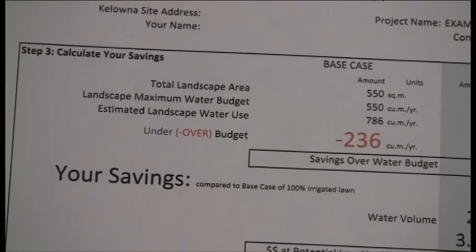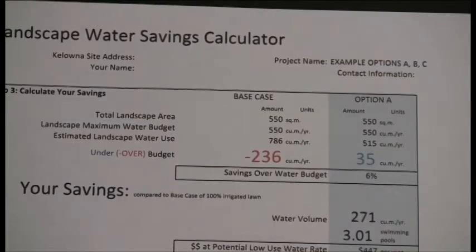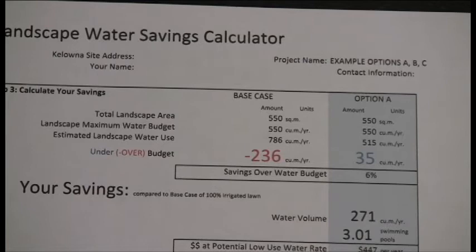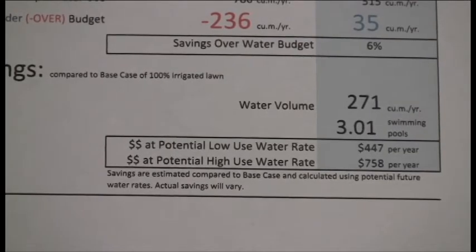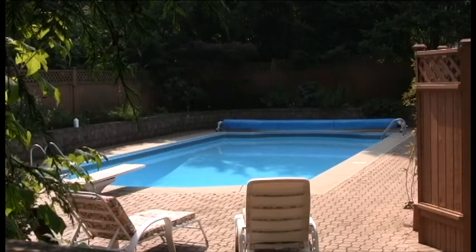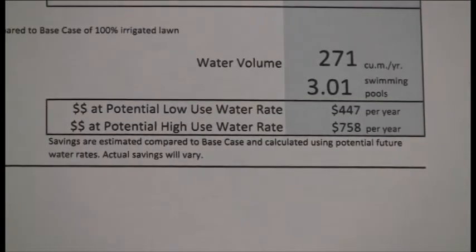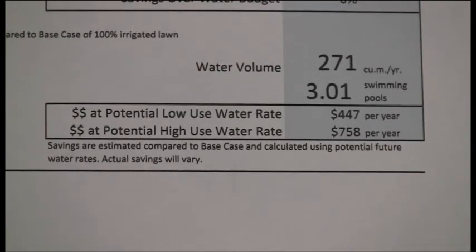The percentages are telling: it's difficult to reach water conservation targets with more than 50% irrigated lawn. Reducing mowing and irrigated lawn area is the first step toward meeting those targets. By having 50% lawn, Option A beats the water budget by 35 cubic meters, saving 271 cubic meters a year compared to the base case — equivalent to three typical backyard swimming pools. The bottom of the calculator also shows potential dollar savings based on water pricing from leading communities in British Columbia.